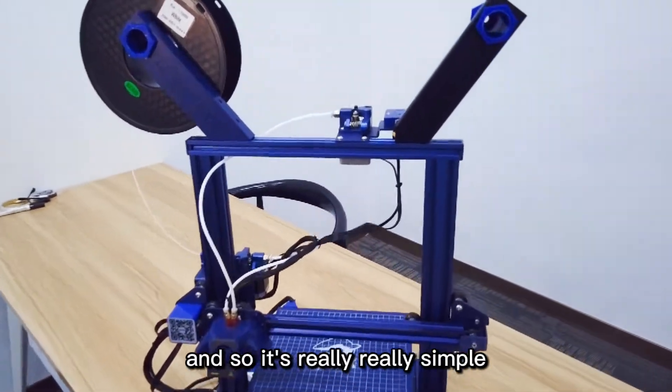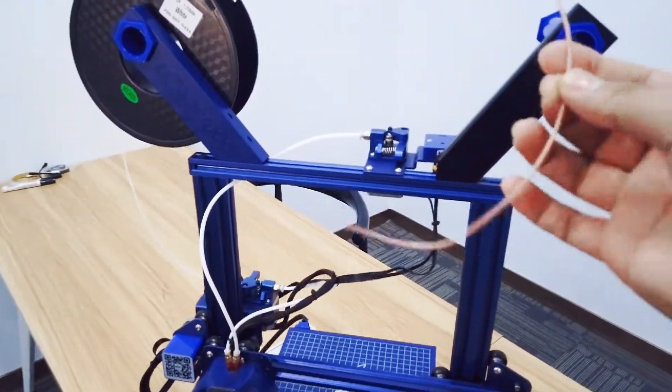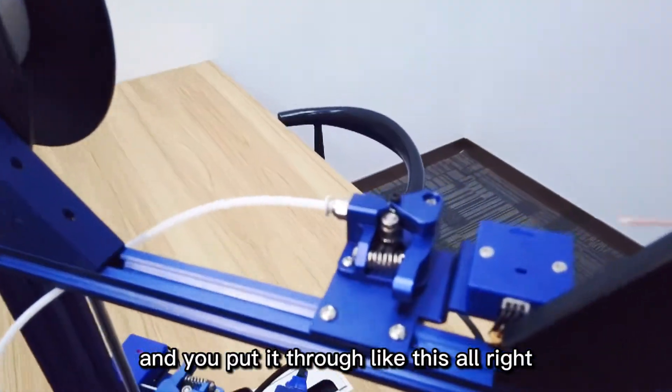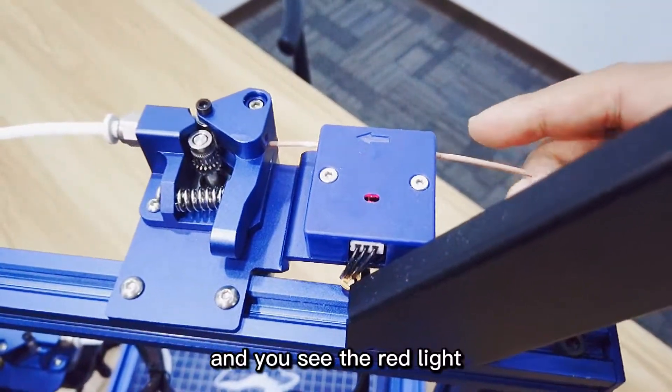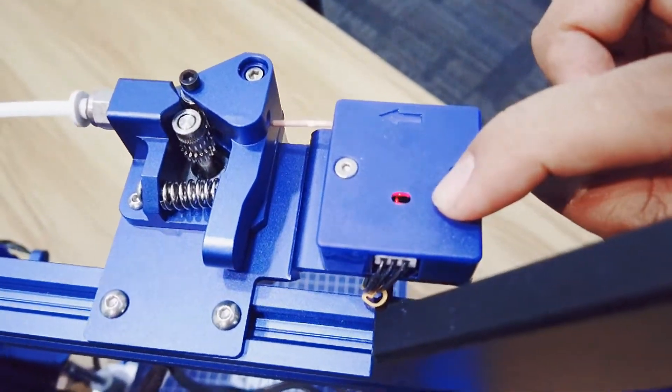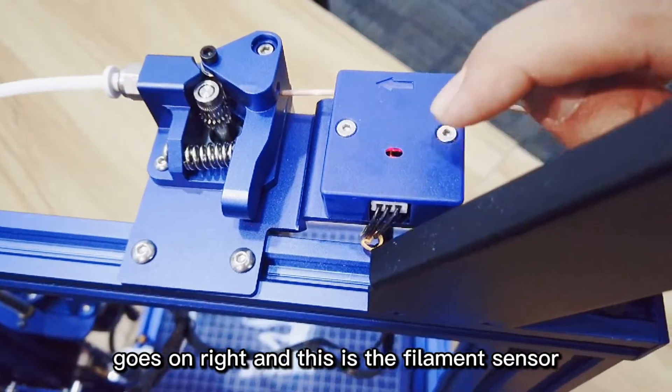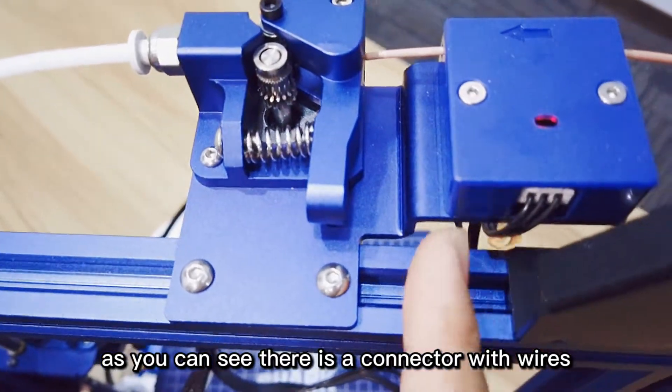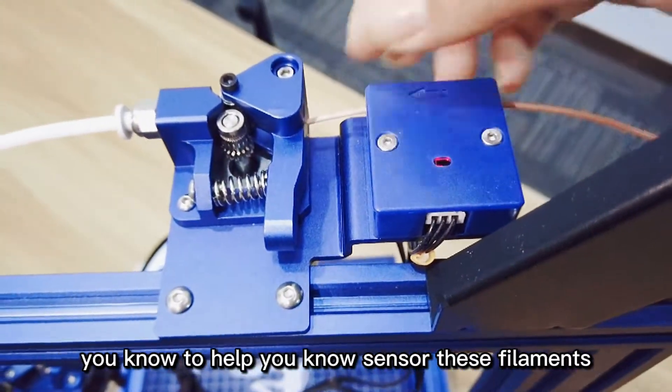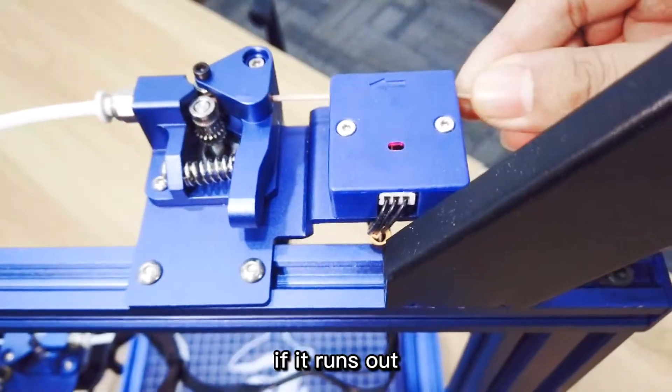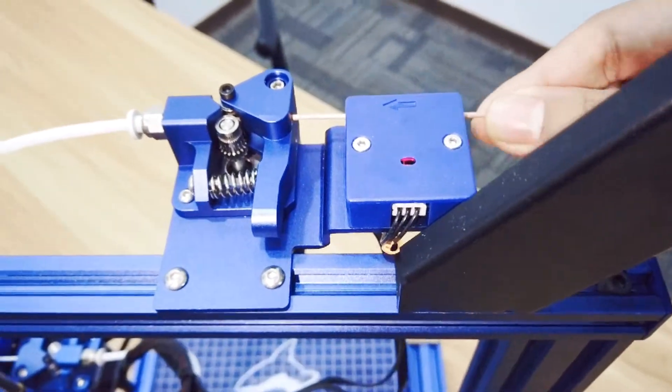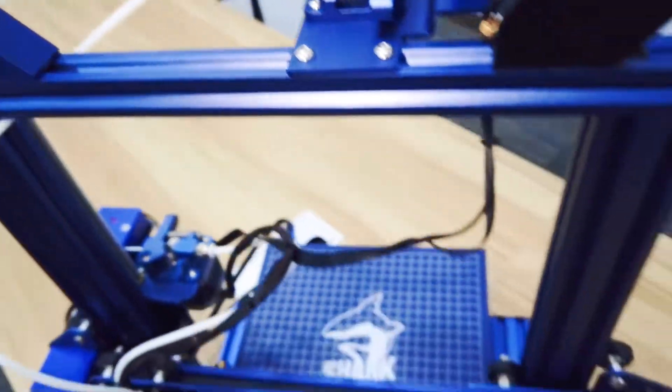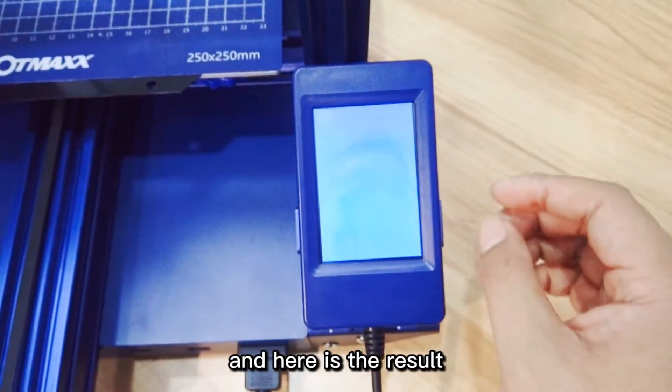You just cut a filament like this and you pull it through like this. You see the red light goes on, right? This is the filament sensor. As you can see there is a connector with wires to help the sensor detect if the filament runs out. It will send an alert. When you put it through the PTFE tube and you start the printer again, here is the result.